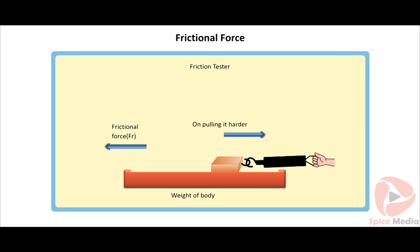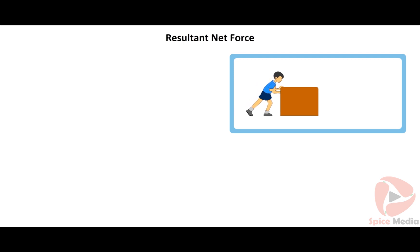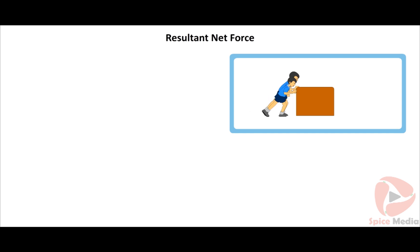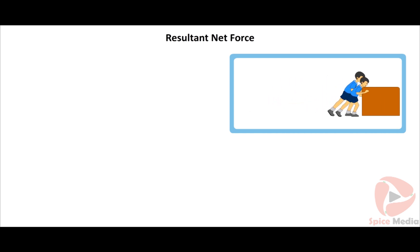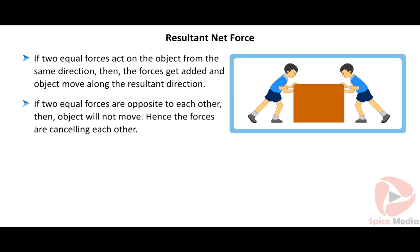Consider a boy trying to move a fully packed box. The box moves with some speed. Now another boy joins him. Of course, the box will now move with greater speed, because two forces are acting on the object from the same direction — the forces will get added and the object moves along the resultant direction. If two equal forces are opposite to each other, then the object will not move, because the forces are canceling each other.